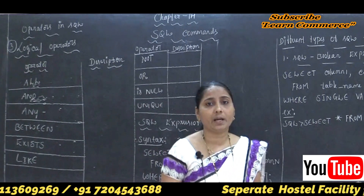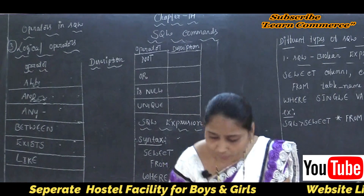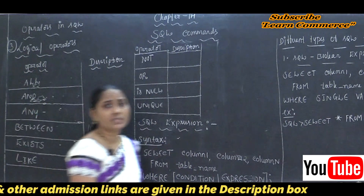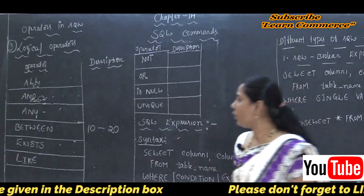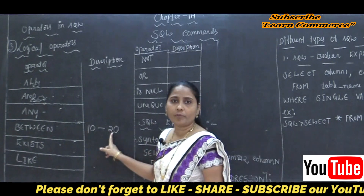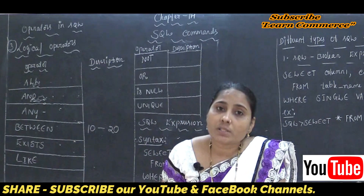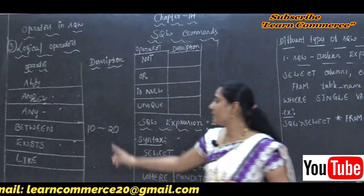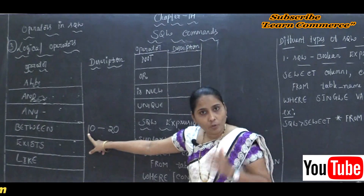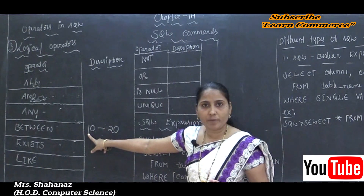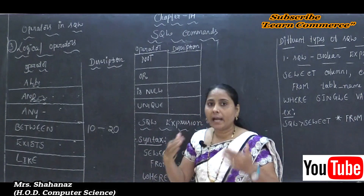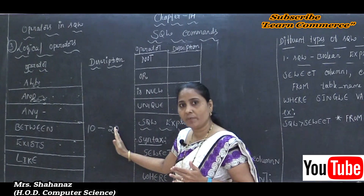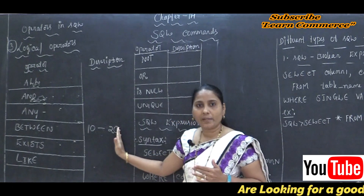The next thing is about the BETWEEN Operator. The BETWEEN Operator is used to search for values that are within a set of values. We need to give the minimum value and the maximum value. For example, minimum value 10 and maximum value 20. We are going to search for values between 10 and 20 using the BETWEEN Operator.